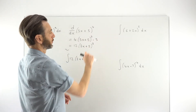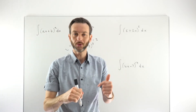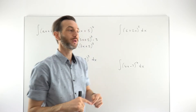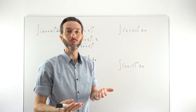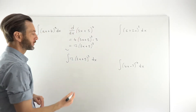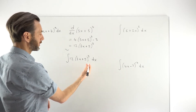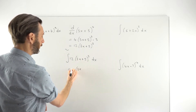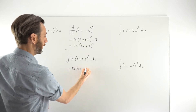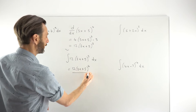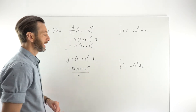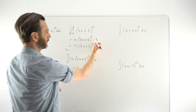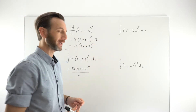Thinking about the steps we went through — we multiplied by the power, reduced the power by one, and multiplied by the derivative of the inside of the bracket. If we reverse those steps, we should get back to the original function. Reversing requires us to increase the power by one, so we take (3x + 5) and increase the power by one, then divide by that new power — dividing by four — but also dividing by the derivative of the inside of the bracket. Since we multiplied by the derivative going forward, we must divide by it going back, and the derivative of the inside is 3.